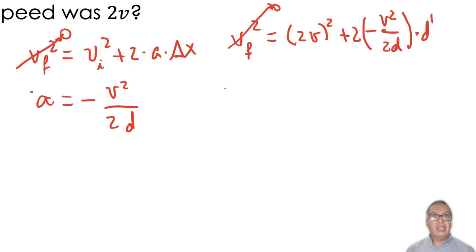we have negative 4b squared is equal to negative b squared over d times d prime. Of course, the square of the speed cancels out, the negatives cancel out, and what we have is 4d is equal to d prime.